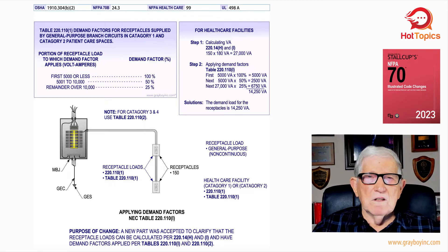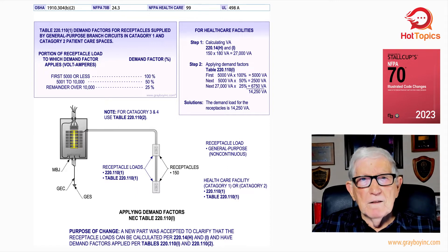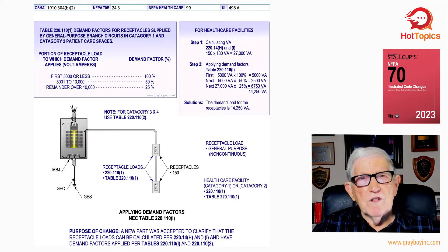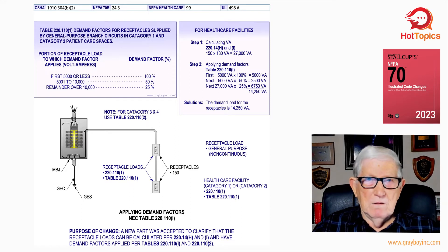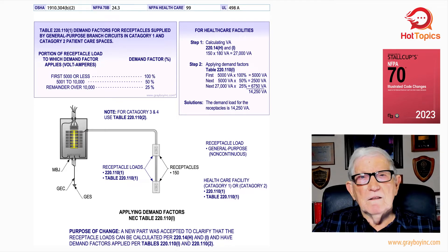That's how that demand factor is determined — through years of experience and taking demand readings and seeing how these receptacles would be used. This is basically what the rule lets you do for receptacles only, but it doesn't say anything about lighting loads. This illustration comes out of Stalkup's Illustrated Code Change book. Looking at the purpose of the change: it's a new part accepted to clarify that receptacle loads can be calculated per Section 220.14H and I, and under certain values, you could have demand factors applied from Table 220.110.1.